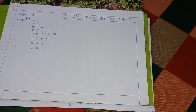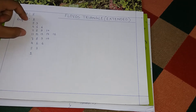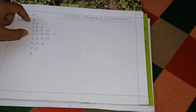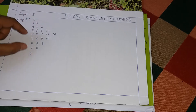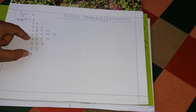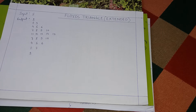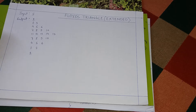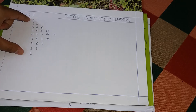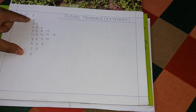Floyd's Triangle requires printing a triangle and also an inverted triangle. In our programs, the i-loop always takes care of the number of rows — the total number of rows — and the j-loop takes care of the number of elements to print in each row.